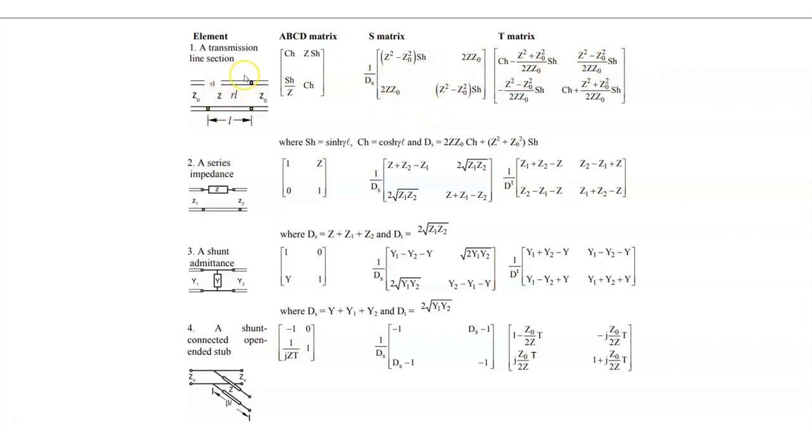What you can do is if you want to take a transmission line section and put it in series with some arbitrary impedance, let's say it's a resistor, you could actually take the S-Parameter matrix for both of these and then put them into ABCD matrix form, or you could put them into T matrix form. Then you could use the ABCD matrix or the T matrix to multiply those together. That's going to give you a new matrix that tells you exactly how the network responds to an input signal.